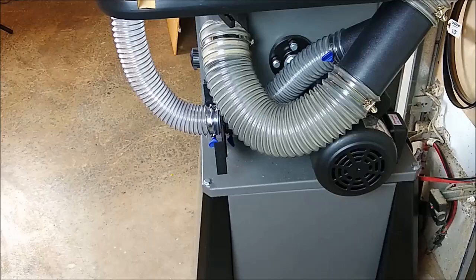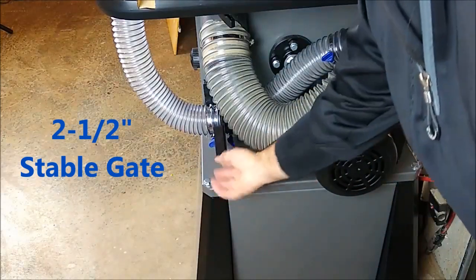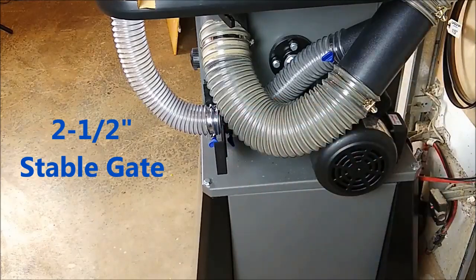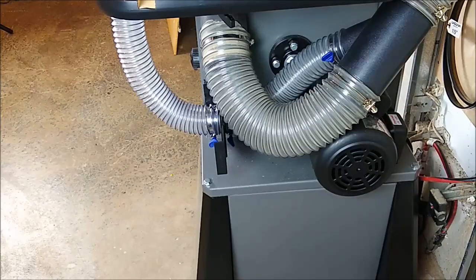From there we go down and we feed a blast gate, and that's just attached with rare earth magnets to the cabinet. It goes up and feeds the new port under the saw.